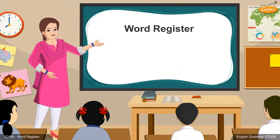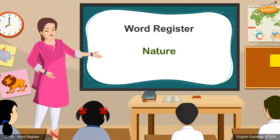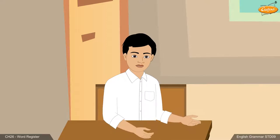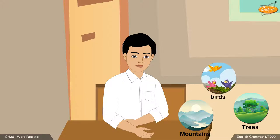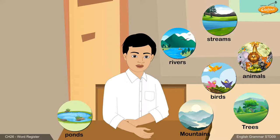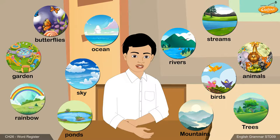Which words or pictures come to your mind when you think or talk about nature? When we think about nature, the pictures that come to our mind are mountains, trees, birds, animals, rivers, streams, ponds, ocean, garden, butterflies, sky, rainbow, etc.